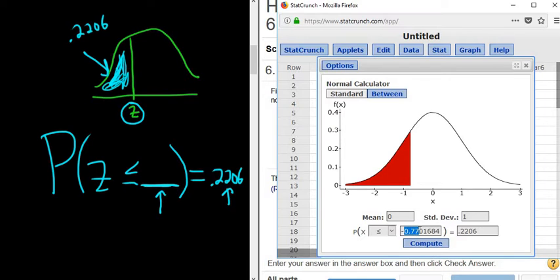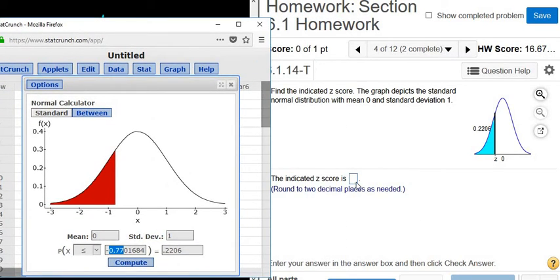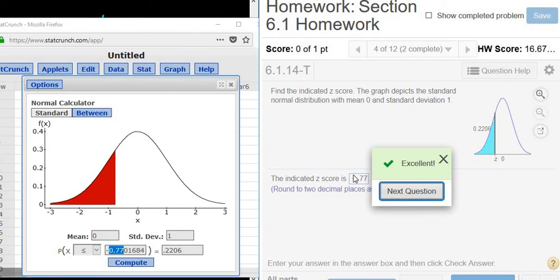There it is, that's the answer. Negative 0.77. That's going to be our z-score in this problem. Notice the picture matches the picture here. So negative 0.77 is the number we want, rounded to two decimals.